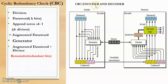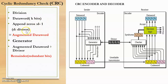At the sender side we have the encoder, and at the receiver side we have the decoder. We perform division using a predefined divisor, and the same divisor is used at both the sender and receiver sides. The data word of k bits is appended with d-1 bits of zeros, where d is the length of the divisor. For example, if the divisor is 4 bits, we append 4-1 = 3 zeros. After appending, we get an augmented data word, meaning the size of the data word increases.